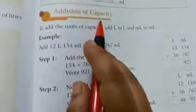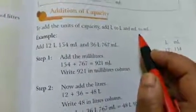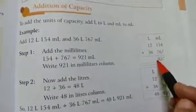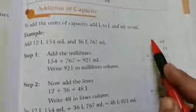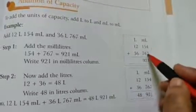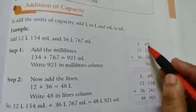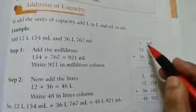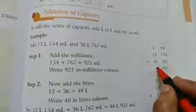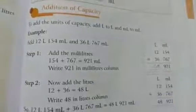Addition of capacity. To add the unit of capacity, add liter to liter and milliliter to milliliter. As we have already done in previous chapters, milliliter is the smaller unit — you add in the smaller column only, and liters into liters only. For example: 7 plus 4 is 11, 5 plus 1 is 6, 6 and 6 is 12 with 1 carry over. Then 6 plus 2 is 8, and 3 plus 1 is 4. Like this way, we have to add.